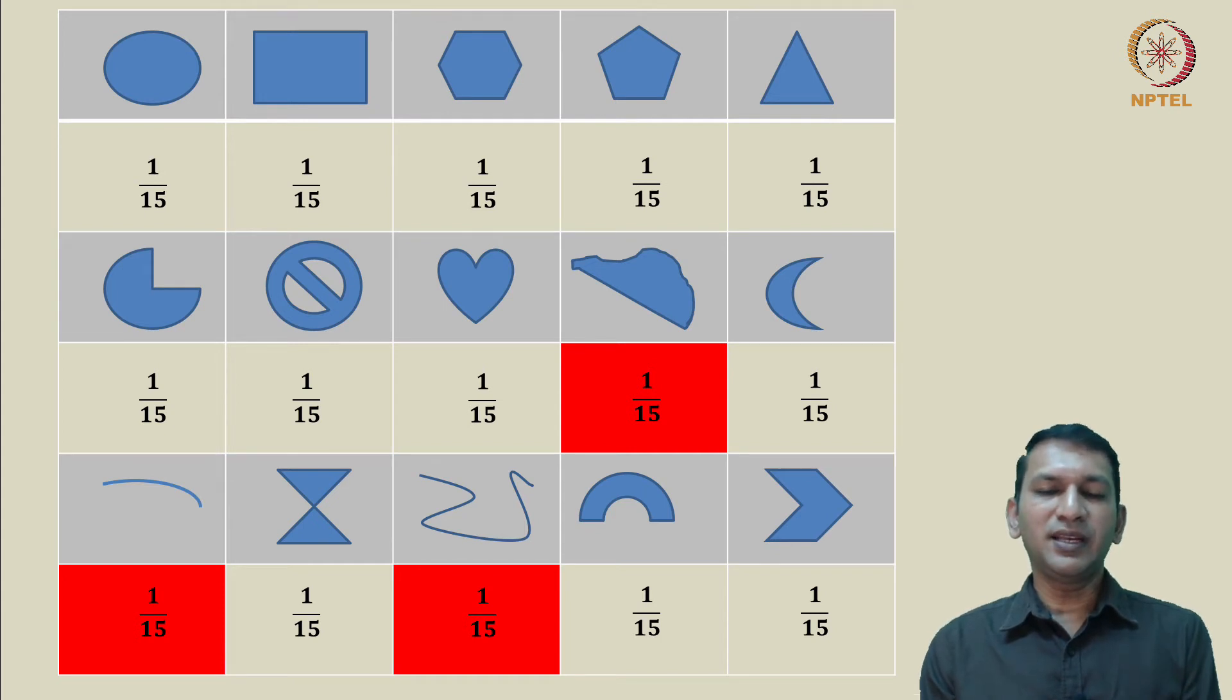So, now from the 15, we are immediately able to exclude three of them with the given piece of information. However, now out of this 15, we have reduced the sample space to 12 and this calls for re-evaluation of probabilities. Once again, using uniform prior, we see that the probabilities for each one of these geometric figures turns out to be 1 by 12.